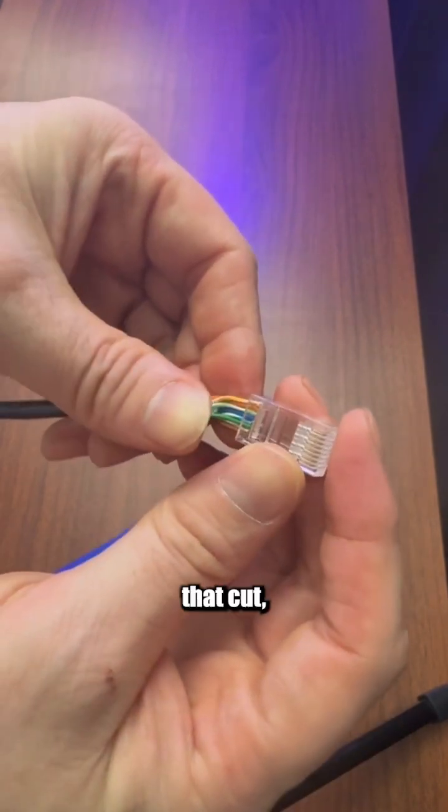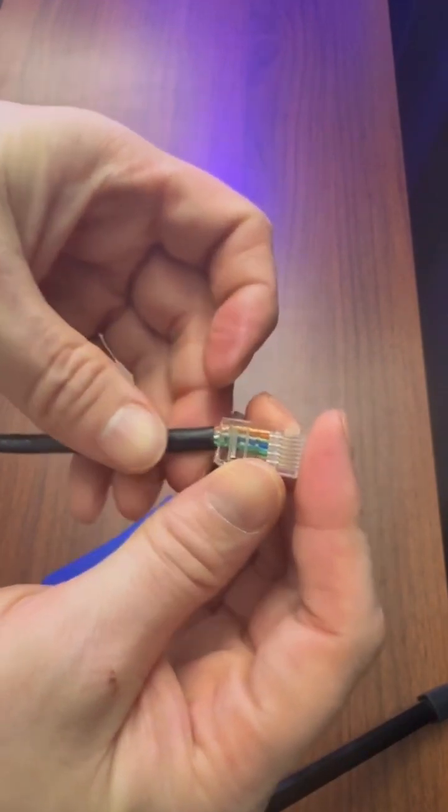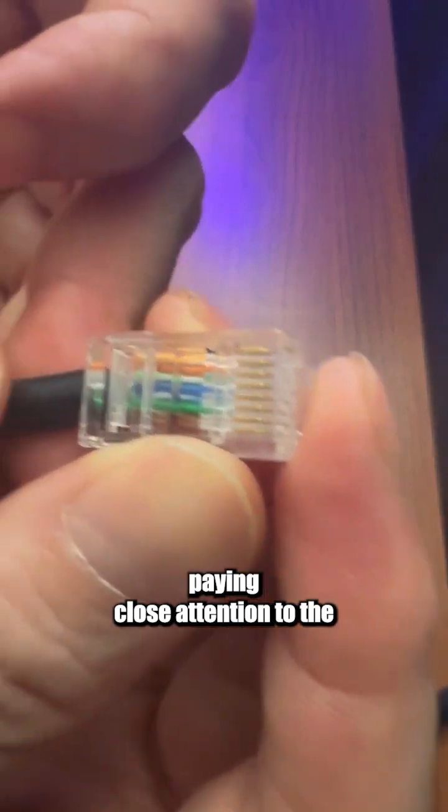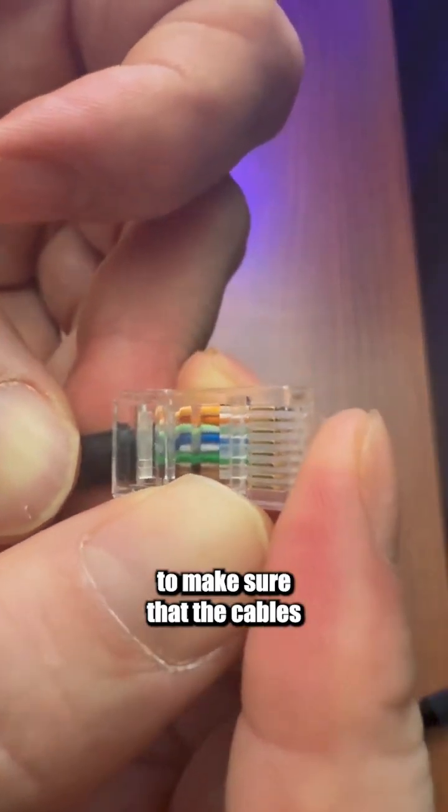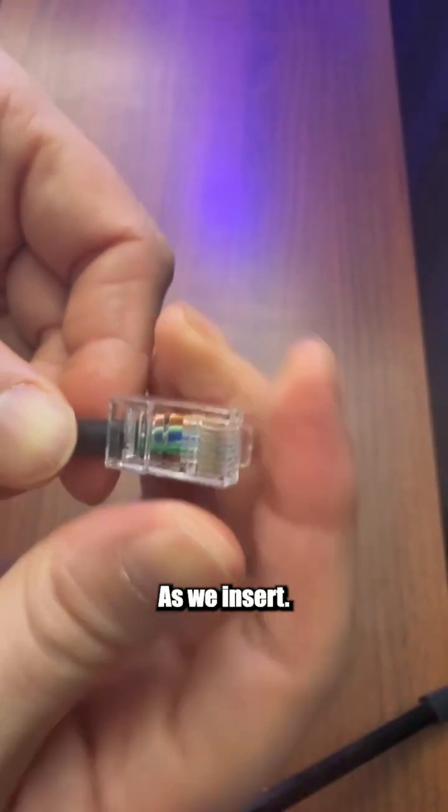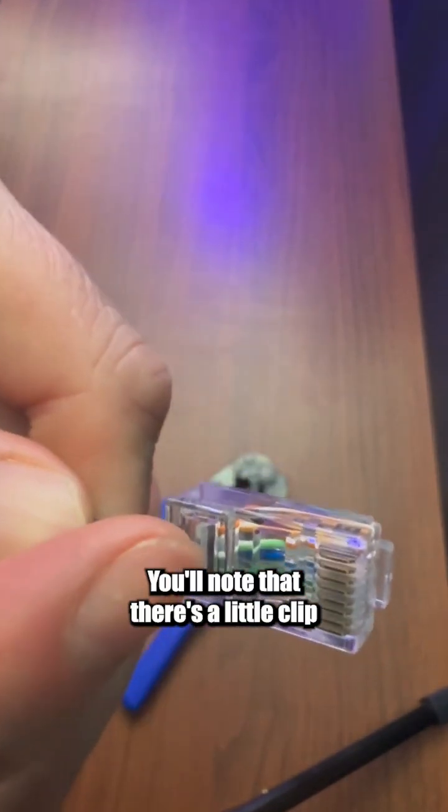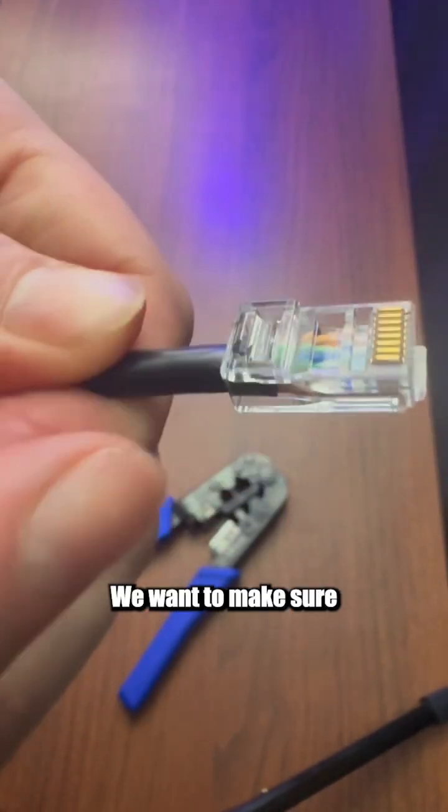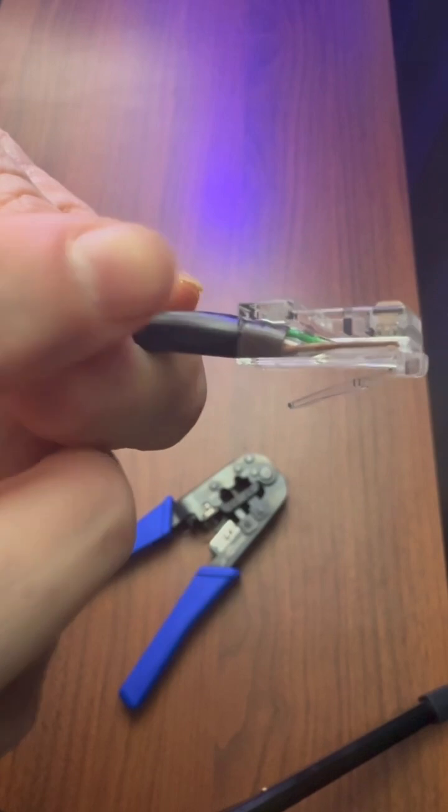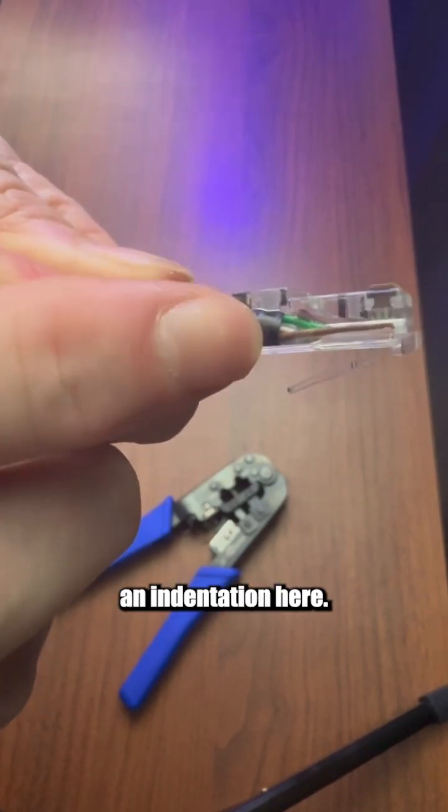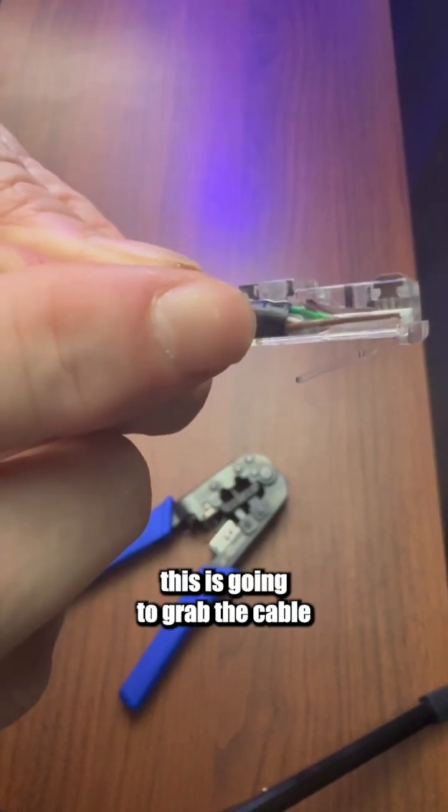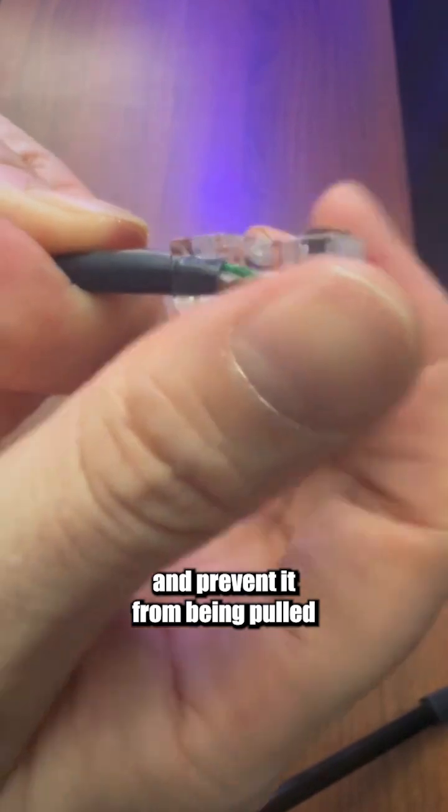Once we perform that cut, we are then going to take the cord, paying close attention to the cable channels to make sure that the cables do not get mashed or crossed as we insert. You'll note that there's a little clip right at the bottom here. We want to make sure that our cable actually hits. You'll notice that it makes an indentation here. The idea is that this is going to grab the cable and prevent it from being pulled out at the end.